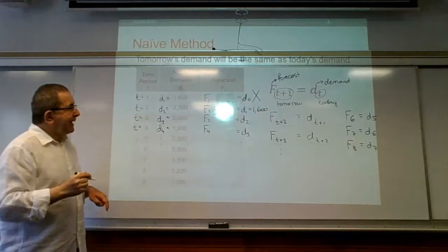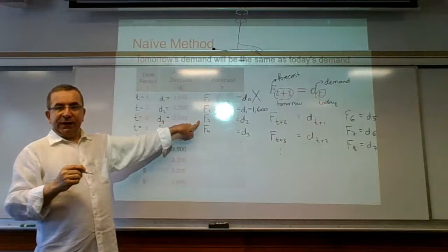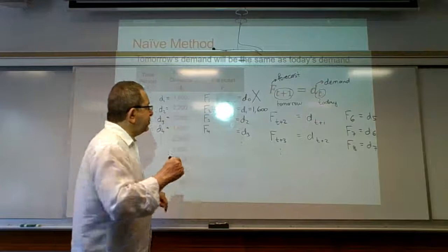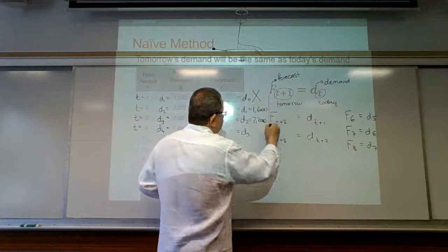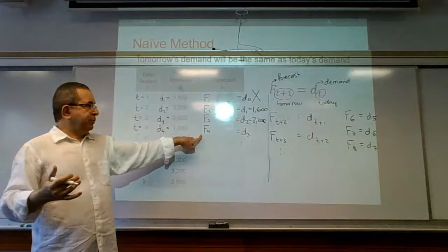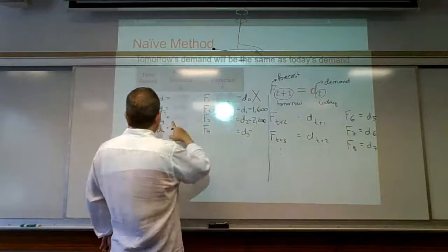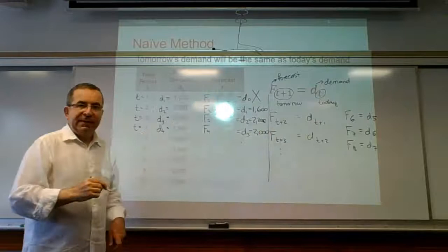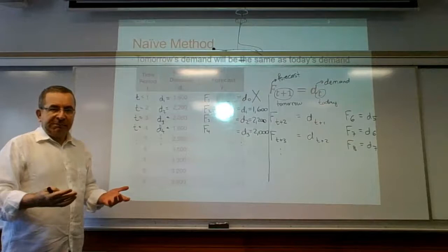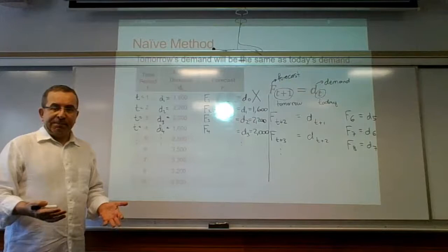To forecast period 3, F3, we go back one period to D2. D2 is 2,200. F4 equals D3, and D3 is 2,000, and so on. So this is the simplest forecasting method, called the Naive method.